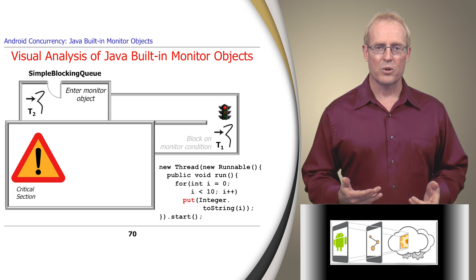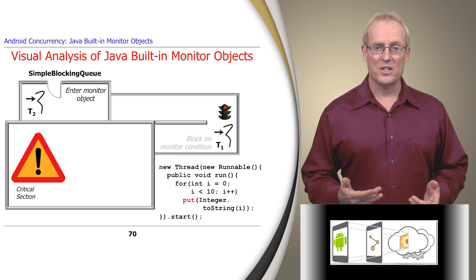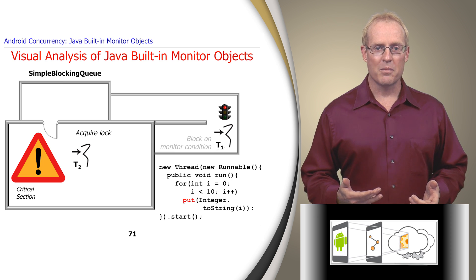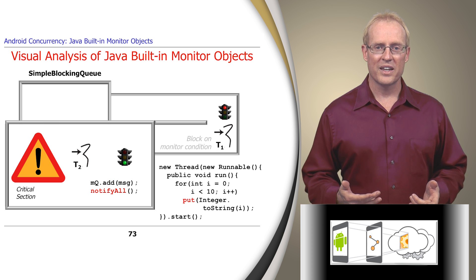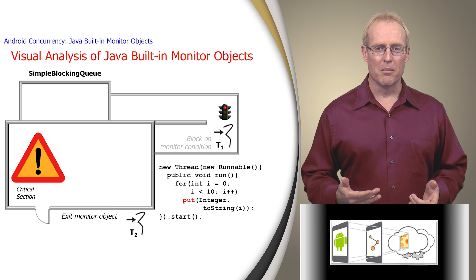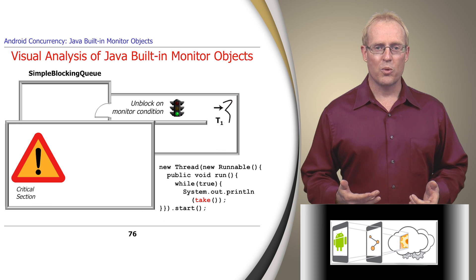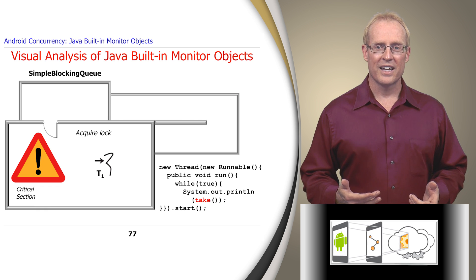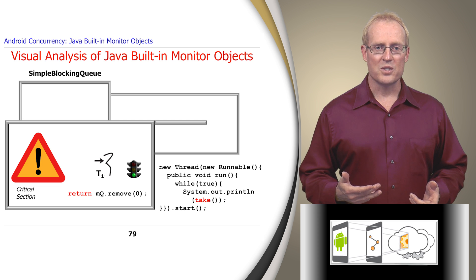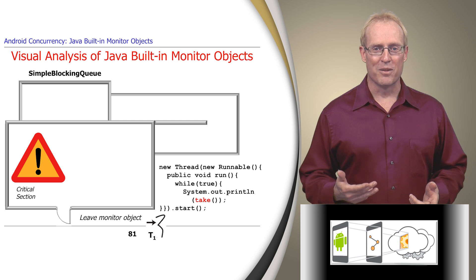In the context of our concurrent producer-consumer example, assume thread T2 calls put on simple blocking queue while thread T1 is blocked on its monitor condition. This causes T2 to enter the monitor object, acquire the monitor lock, add the message to the MQ list, call notifyAll to wake up any and all threads waiting on the monitor condition, and then release the monitor lock and exit the monitor object. At this point, thread T1 is unblocked, reacquires the monitor lock, and removes and returns the first item in the MQ ArrayList, releasing the lock and leaving the monitor object.